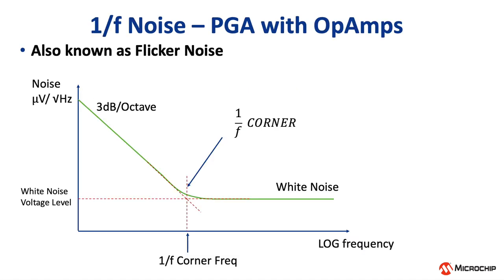Formally, flicker noise — or more colloquially pink noise — is a type of electronic noise with 1-over-f power spectral density. Power spectral density is the amount of energy or power per frequency interval or bin, and the significance of this inverse proportionality between energy and frequency is that doubling or halving the frequency, or an octave for those who love music, carries an equal amount of change in noise energy. This means that the noise increases linearly at progressively lower frequencies, causing erroneous DC measurements.